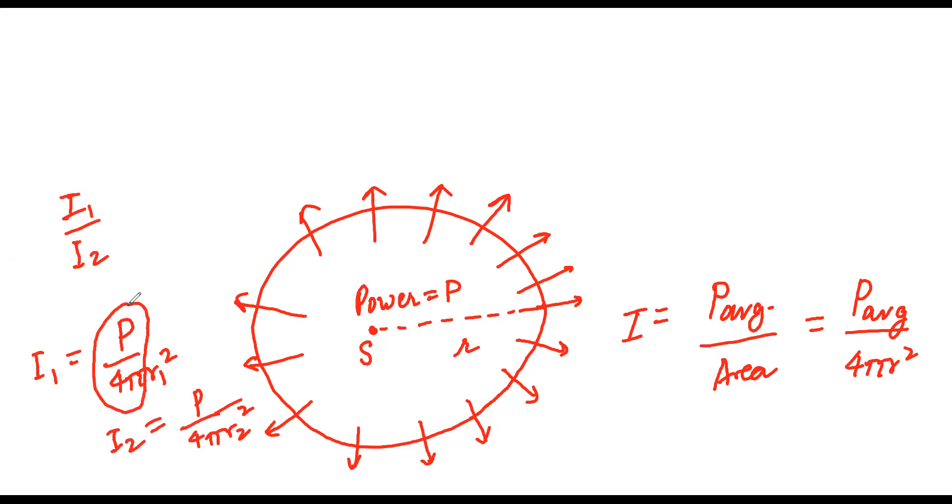So what happens when we take I₁ by I₂? It becomes r₂² by r₁².